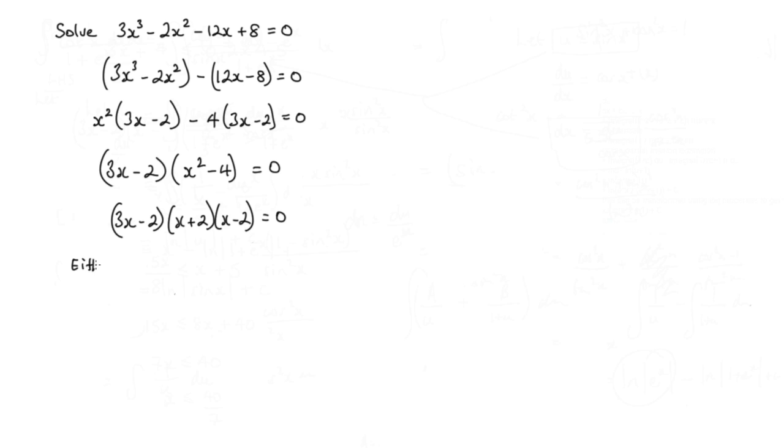So either 3x minus 2 equals 0, which would therefore imply that 3x equals 2, or x equals 2 thirds. Or we could have that x plus 2 equals 0, which would imply that x equals negative 2. Or we could even have that x minus 2 equals 0, in which case x would equal 2.